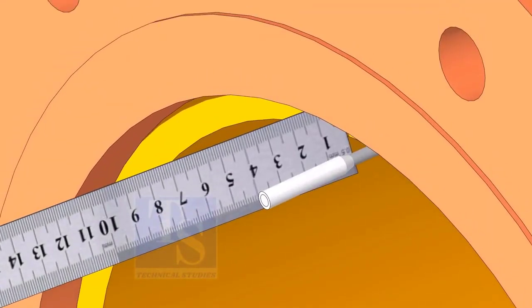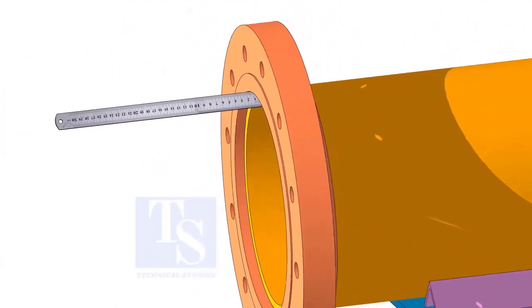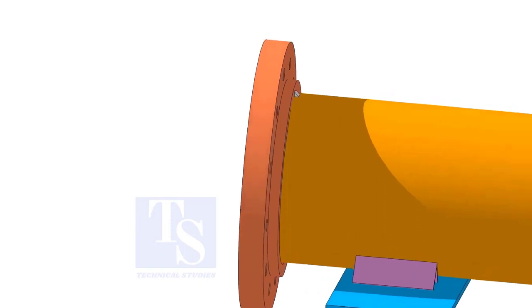Now, adjust the gap between the face of the flange and the pipe. Tack weld on the top side.